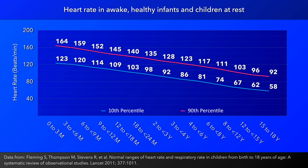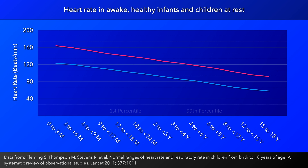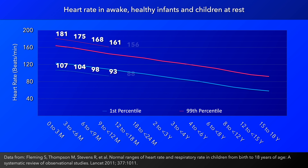This gradually decreases to between 58 and 92 beats per minute. Now we'll see the first and 99th percentiles added to the graph, represented by a thin blue and pink line respectively.